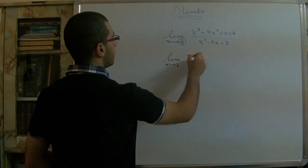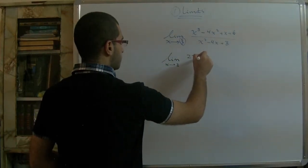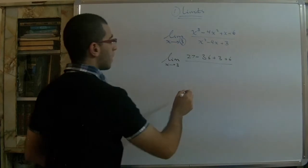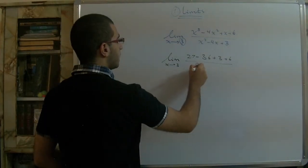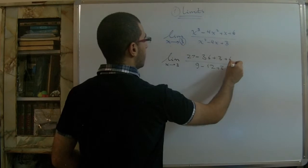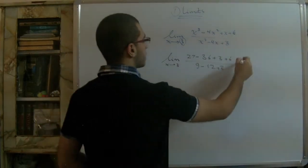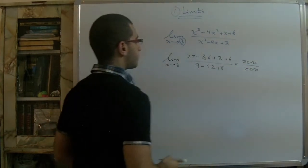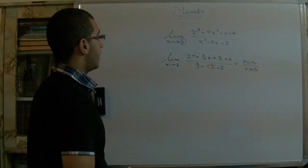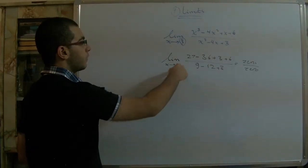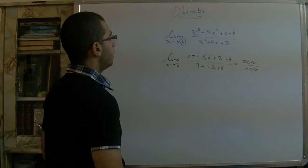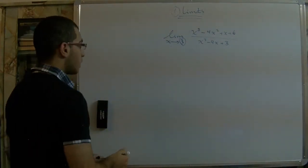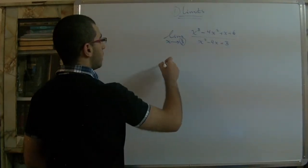We get 27 − 36 + 3 + 6 in the numerator and 9 − 12 + 3 in the denominator. The numerator gives 36 − 36 = 0, and the denominator gives 12 − 12 = 0. So we realize that (x − 3) is a factor of both the numerator and denominator.